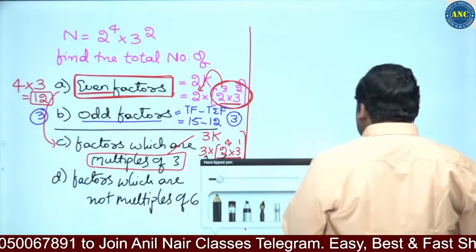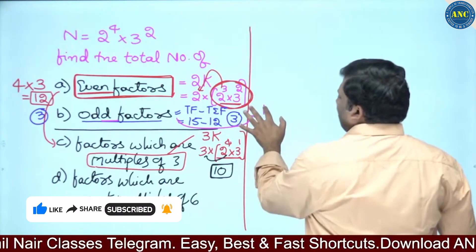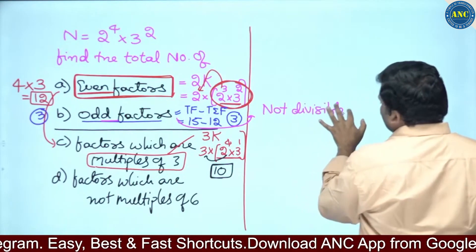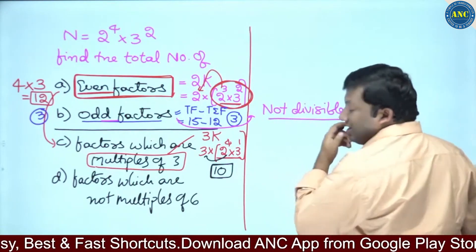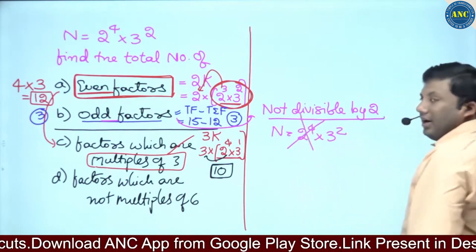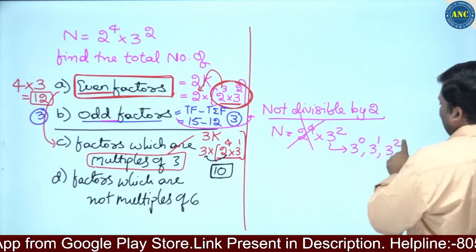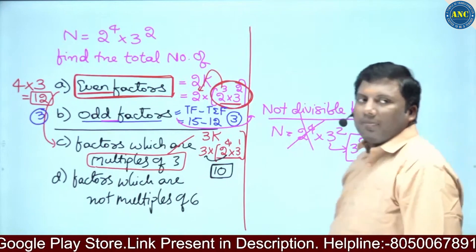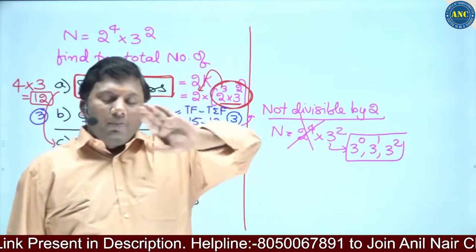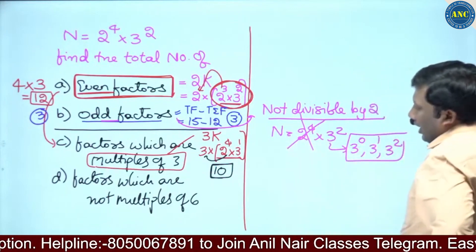Another way: odd factor means it is NOT divisible by 2. Odd numbers are never divisible by 2. So for n = 2 power 4 into 3 square, eliminate all the powers of 2. We are left with 3 power 2. The combinations are 3 power 0, 3 power 1, 3 power 2 — that's 3 combinations. Whenever finding odd factors, remove all powers of 2 because odd numbers are never divisible by 2.